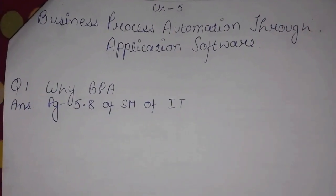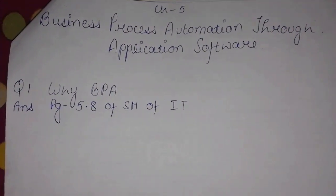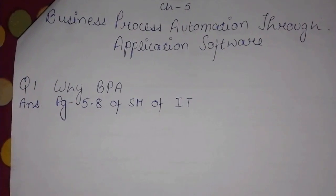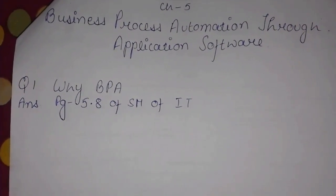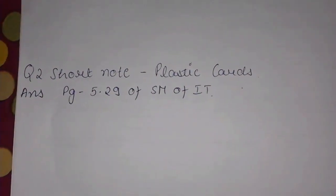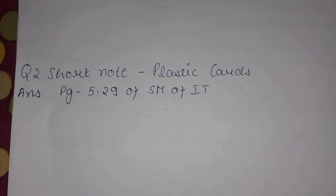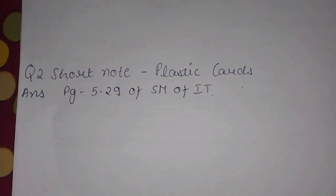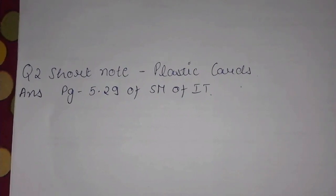Chapter 5: Business Process Automation through Application Software. Question 1 is Why BPA? Its answer can be found on Page 5.8 of the Study Material of IT. Question 2 is a Short Note on Plastic Cards. Its answer can be found on Page 5.29 of the Study Material of IT.